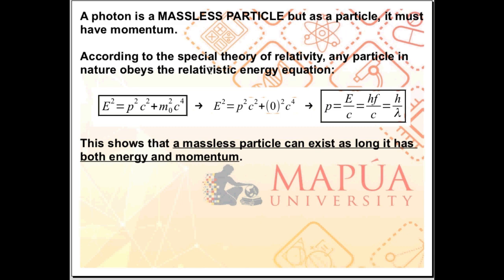According to the special theory of relativity, any particle in nature obeys the relativistic energy equation. The same goes for the photon. For the photon, E squared is equal to P squared C squared plus M naught C to the fourth power, where M naught defined as the rest mass of the particle. Mass of the particle when the particle is at rest. Since photon is a massless particle, we can set M naught to 0, leaving us with E squared is equal to P squared C squared or E is equal to P C.